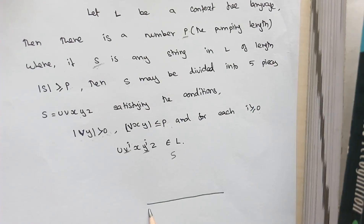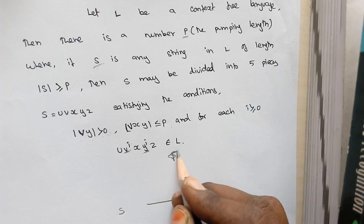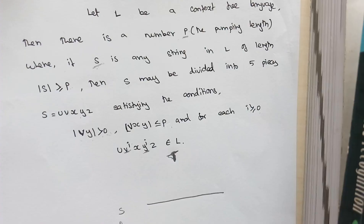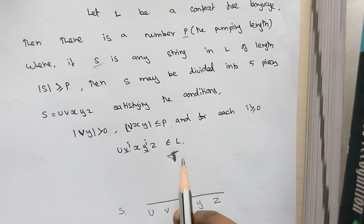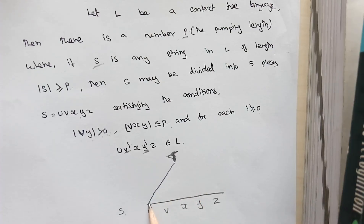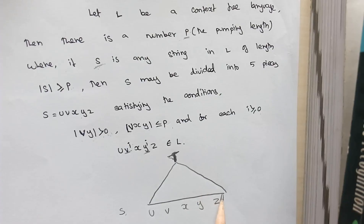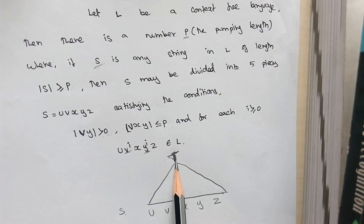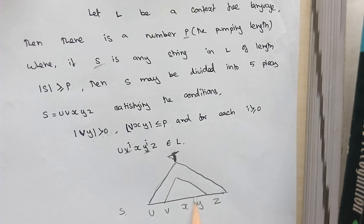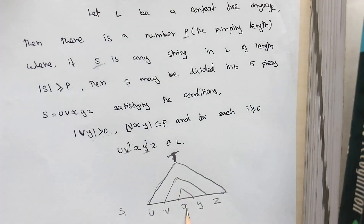Our input is the string S. We can have the starting symbol as some variable, say T. Since S is considered as an input string, we divide this string into U, V, X, Y, and Z. We start from the starting symbol and derive this input using a parse tree. Some portion of the tree derives U, V, X, Y, and Z — this is how a derivation is made.